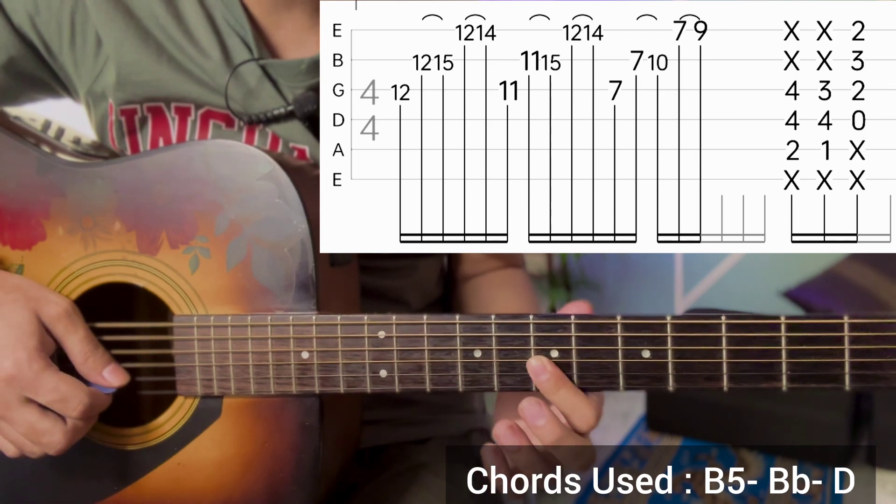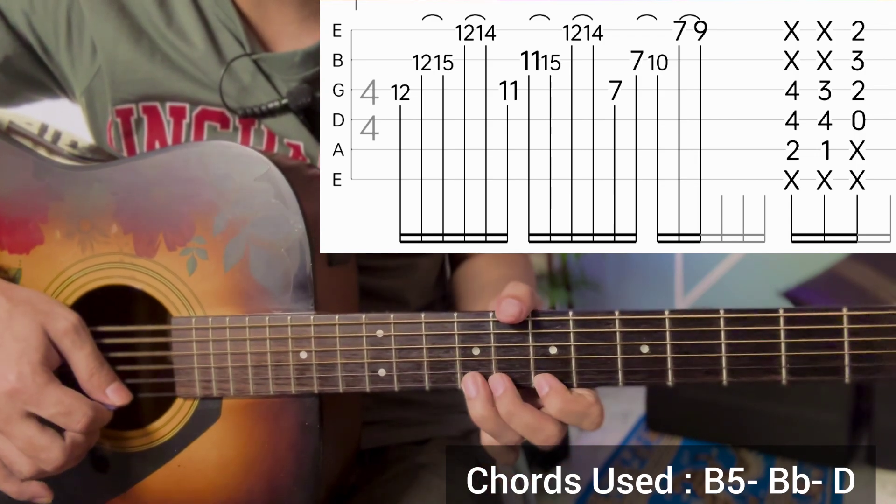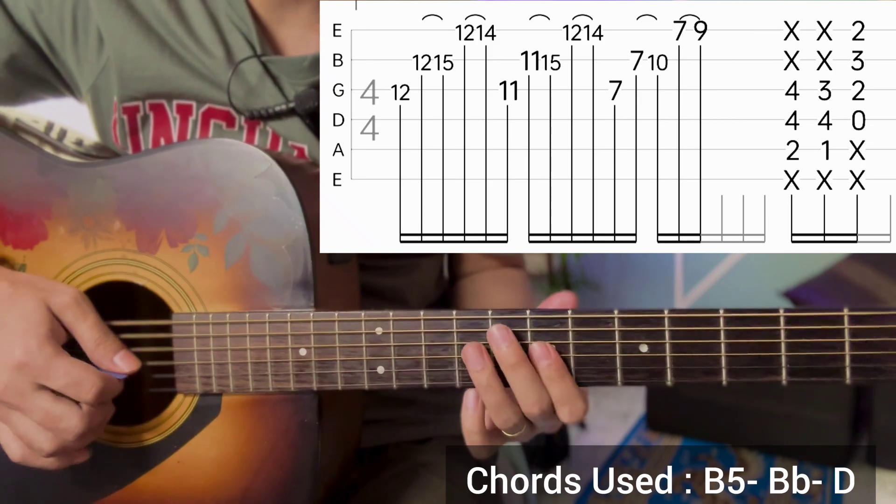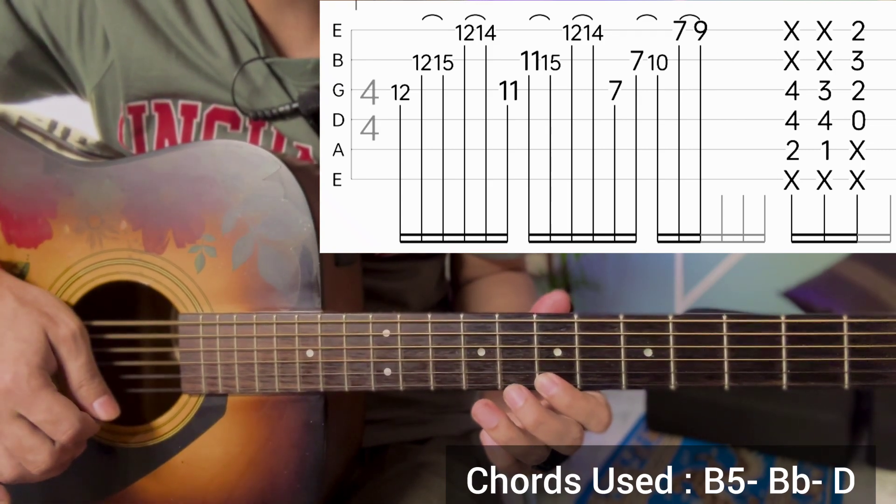Second string is 7-10 hammer on, first string is 7-9 hammer on, second string is 7-10, first string is 7-9. Good, this is the next part starting.